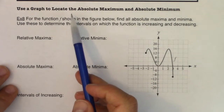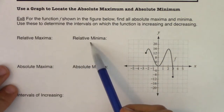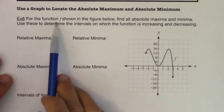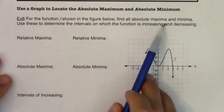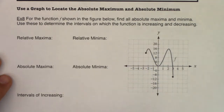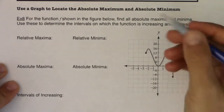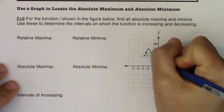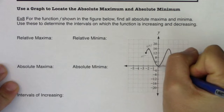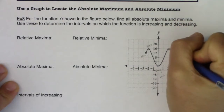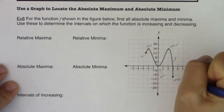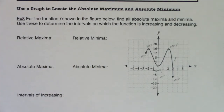In Example 8, we'll use a graph to locate absolute maxes and mins, and also review relative extrema and increasing/decreasing intervals. The problem asks us to find all absolute maxima and minima, then use those to determine intervals of increasing and decreasing. Normally you find extrema first, then determine increasing/decreasing intervals. Looking at the graph, I can see what looks like a local min, a local max, another local min, another max, and another min — relative maxes and mins come a dime a dozen.